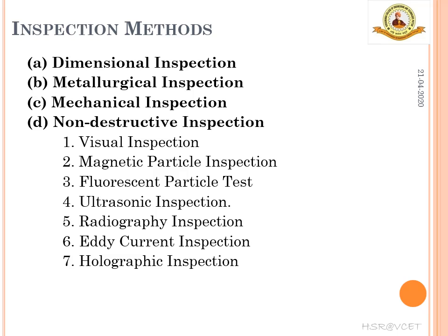Next is non-destructive inspection, which involves assessing the soundness and acceptability of parts without destroying or altering the structure of the fabricated parts. Internal defects like cracks, flaws, blowholes, etc. can be effectively determined by this method. The various steps involved in non-destructive inspection are visual inspection, magnetic particle inspection, fluorescent penetrant inspection, ultrasonic inspection, radiography inspection, eddy current inspection, and holographic inspection.